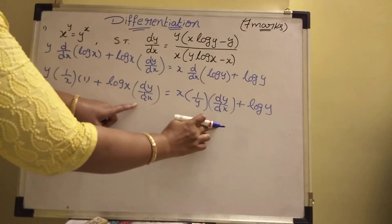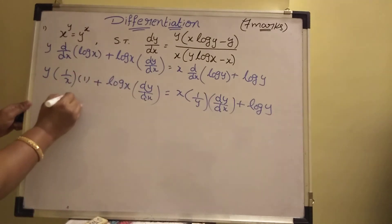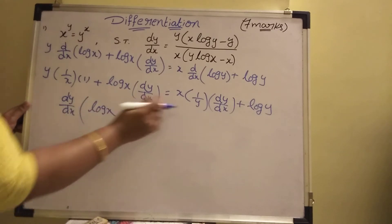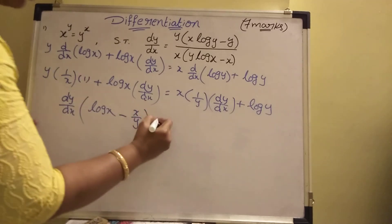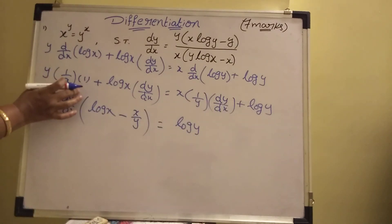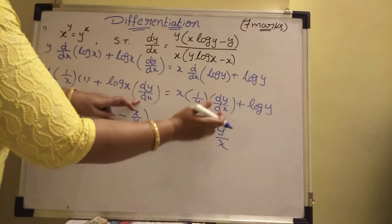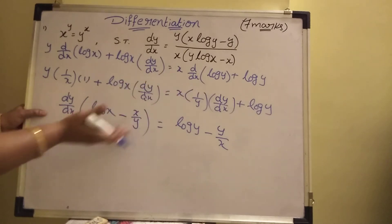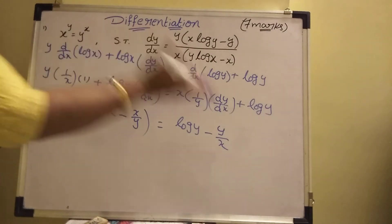Now see — here dy by dx appears on both sides. Collect dy by dx terms to one side. dy by dx terms: log x minus x by y. Equal to log y minus y by x. That is, dy by dx into (log x minus x/y) equals log y minus y/x.